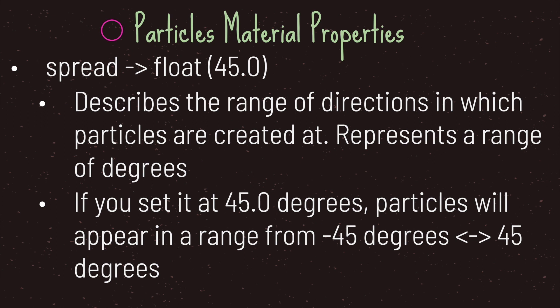The next property is the spread property. By default, its float value is set to 45. The spread property describes the range of directions in which particles are created. It represents a range in degrees — for example, if you set it to 45 degrees, particles will appear in a range from negative 45 degrees to positive 45 degrees.